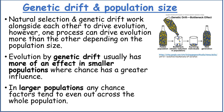Natural selection and genetic drift work alongside each other to drive evolution. However, one process can drive evolution more than the other depending on population size. Evolution by genetic drift usually has more of an effect in smaller populations, where chance has a greater influence. In larger populations, any chance factors tend to even out across the whole population.